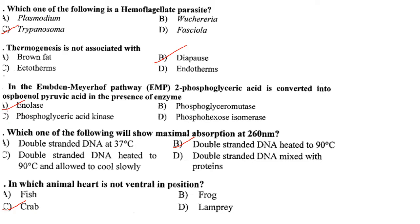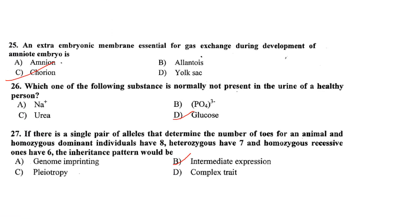In which animal is the heart not ventral in position? It is in the case of crab. Answer is option C. An extra-embryonic membrane essential for gaseous exchange during development of amniote embryo is the chorion. Answer is option C.